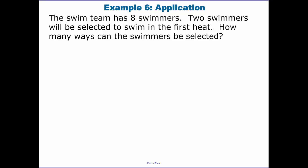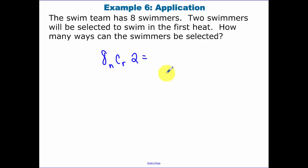A swim team has eight swimmers. Two swimmers can be selected to swim in the first heat. Order doesn't matter in this case. How many ways can they be selected? We have 8 swimmers and we're choosing 2, so it's 8 C 2, which equals 28. There are 28 different ways to choose two swimmers from the eight.